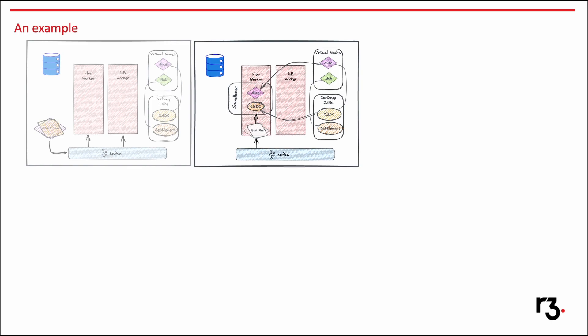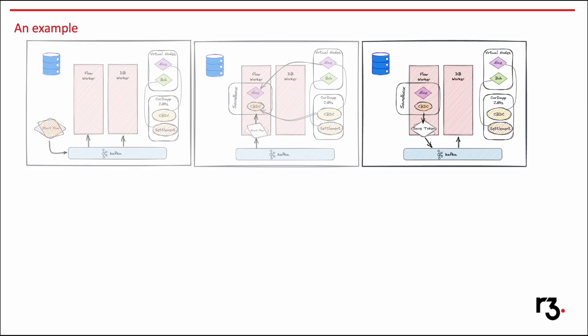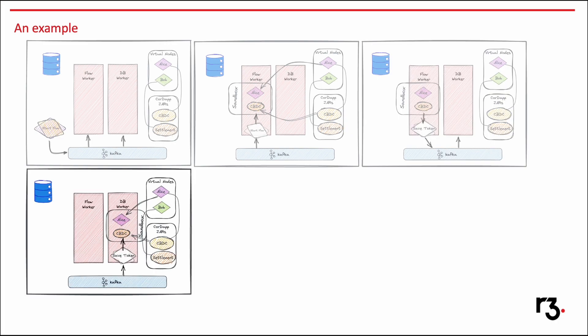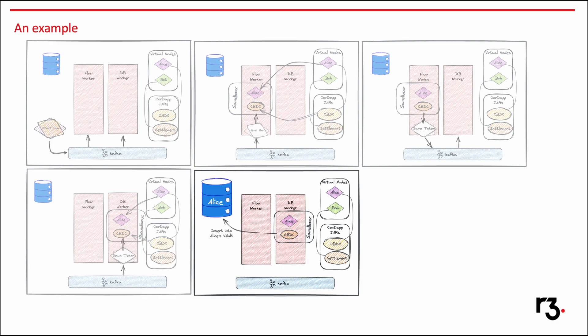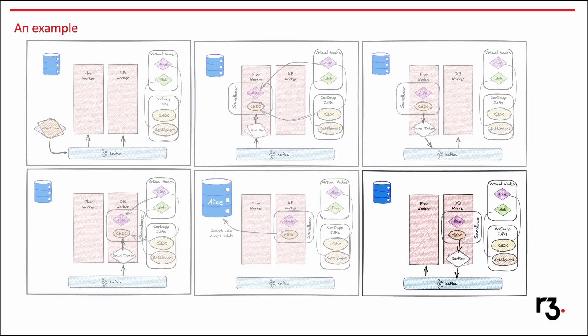Let's say the flow needs to save a token to the database. As we've seen earlier, we have separated these concerns, and hence the flow worker doesn't have access to the database. So it puts a save token instruction to the Kafka message bus. At this point, the flow is checkpointed and the current flow worker is freed up to do some other work. This instruction is picked up by the DB worker, which identifies that the message is in the context of Alice and loads the CBDC jars in a sandbox environment. It will save the token to Alice's vault, then sends a signal back to the message bus, which gets picked up by any available flow worker, and the flow continues.